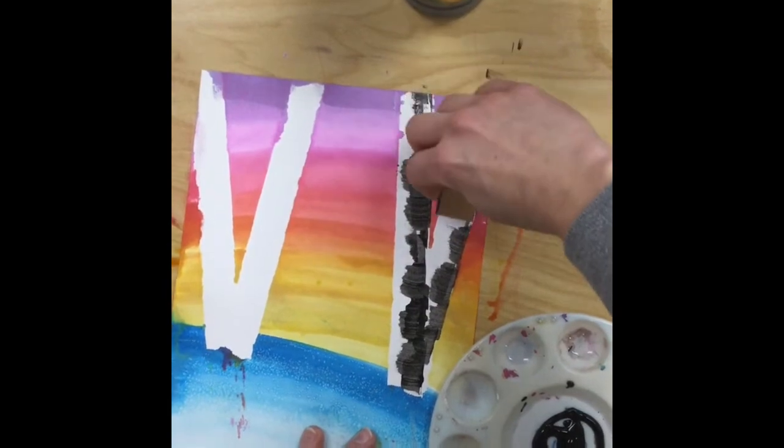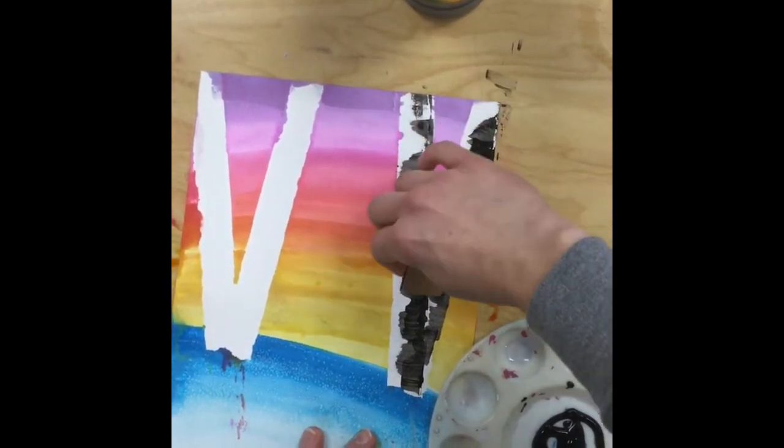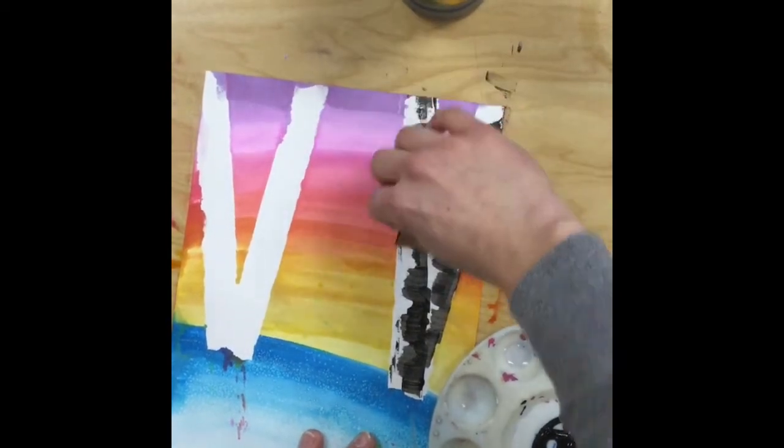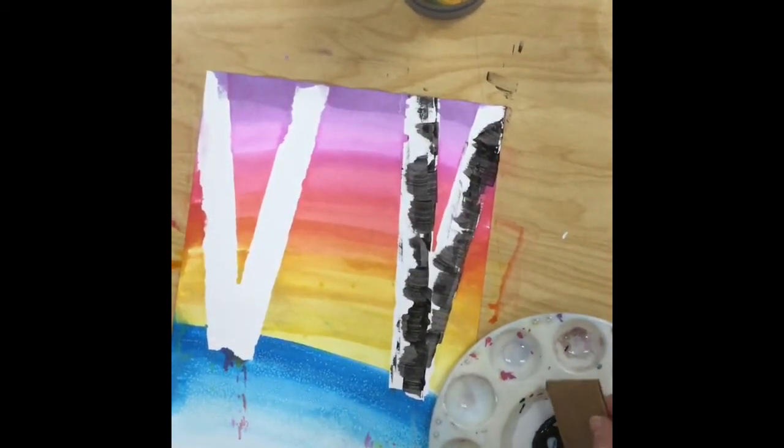Feel free to turn your paper if it's easier for you. Notice how one side of the tree looks dark because it's in the shadow and one side of the tree is light.